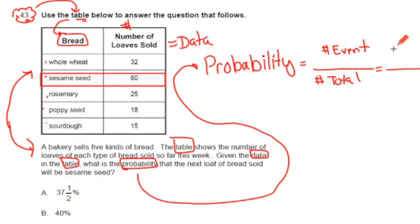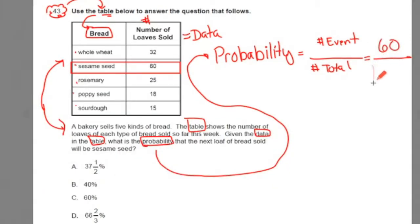In this problem, they tell us that 60 loaves of sesame seed bread were sold, and what we've got to do is figure out the total loaves sold that whole week. That means we're going to add up these data points. Now whenever you do this, try and find ways of adding these numbers up that are convenient and reduce careless mistakes. For example, 25 and 15 add up nicely to 40. And 32 and 18 add up nicely to 50, plus the 60. If we add the 40 to the 60, we get 100. And 100 plus the 50 gets us to 150. We just found out the total number of loaves of bread sold that week was 150.